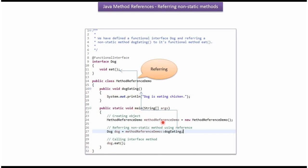Inside main method I have created a MethodReferenceDemo object. Then using method reference I am referring dogEating method to functional method eat.